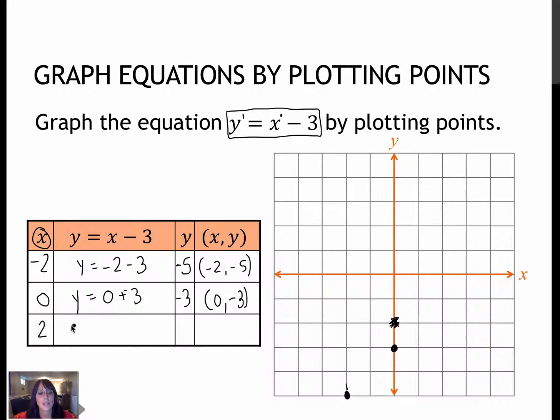And then for my last one, y equals 2 minus 3. 2 minus 3 is negative 1. So 2, negative 1 is my last point. 2 to the right, 1 down.